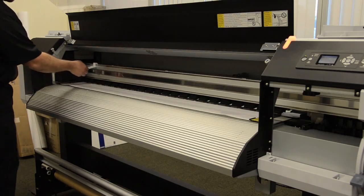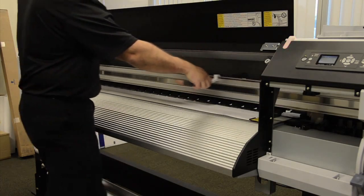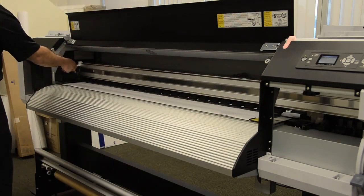From there, we can use our carriage rail tool, place it on the rail itself, and gently rub back and forth on the carriage rail.